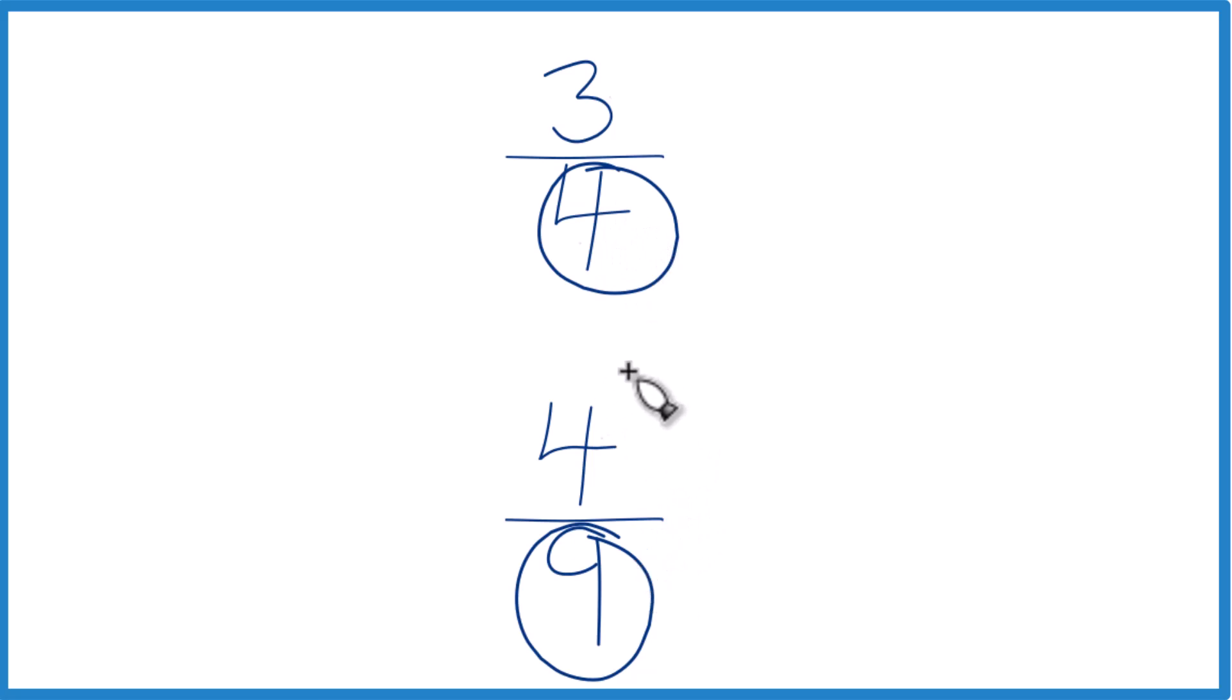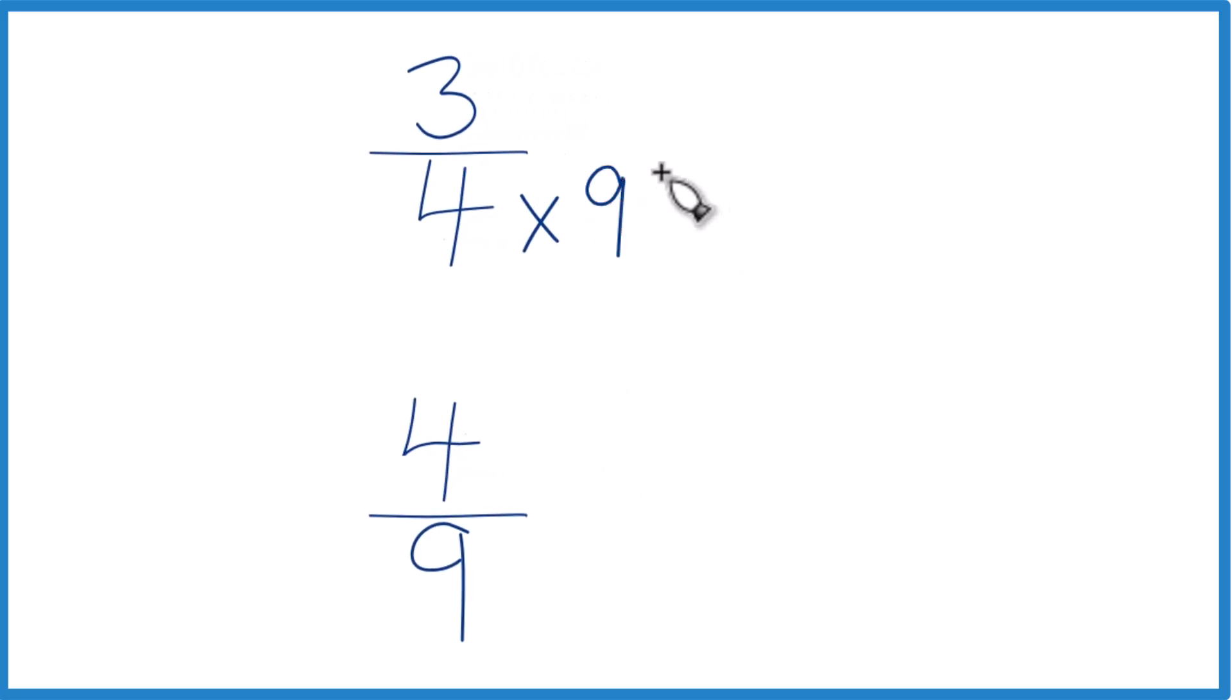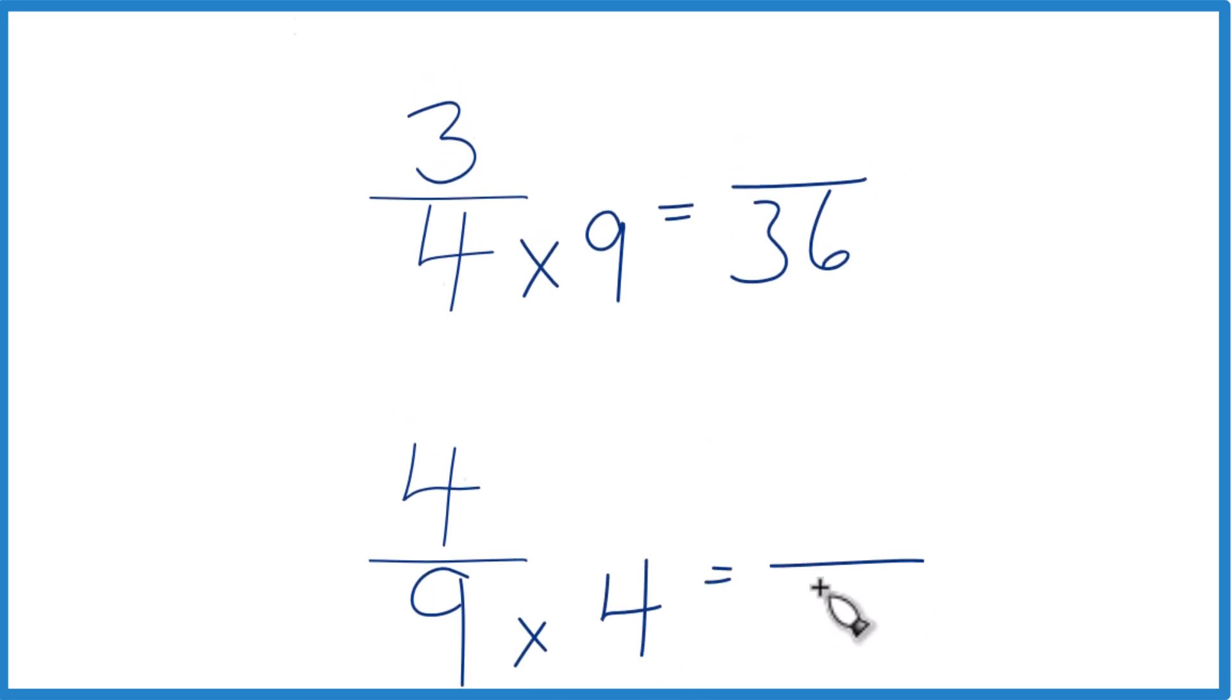we can just compare the numerator. Probably easiest just to multiply 4 times 9, which would give us 36, and then 9 times 4, that would give us 36. Pretty quick.